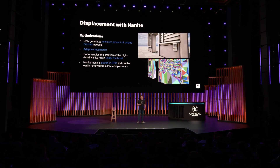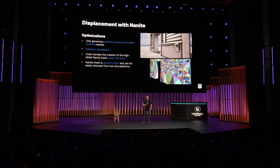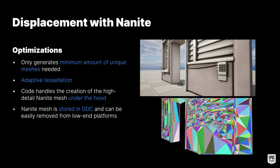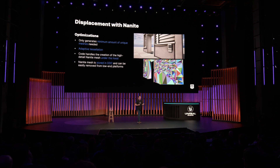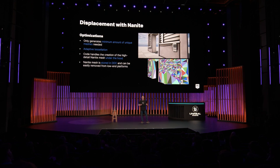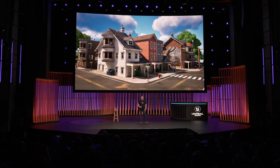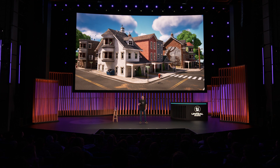This system allowed us to optimize even further — it only generates the minimum number of unique meshes needed. Our engineers added adaptive tessellation, which reduced the vertex count of our displaced meshes significantly and reduced overall memory usage. This is all handled under the hood, and our artists don't even have access to the high-detail mesh in editor. The high-detail mesh gets stored directly in a DDC and can be easily removed from platforms that don't use Nanite. All of this lets us create incredibly high-detailed environments with a low impact on the artist's workflow.